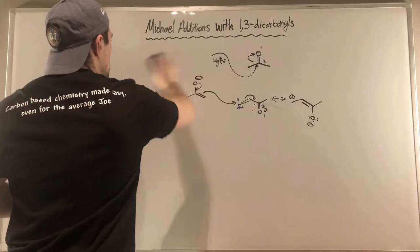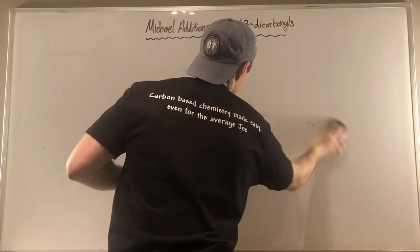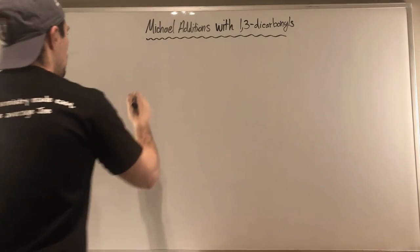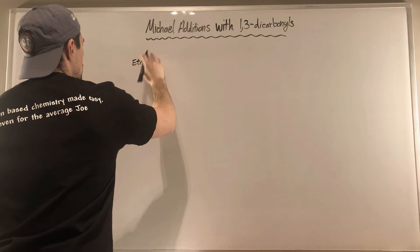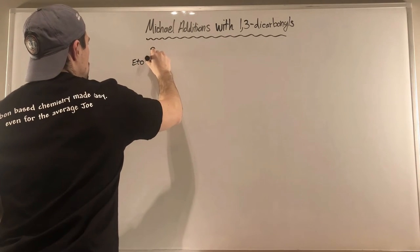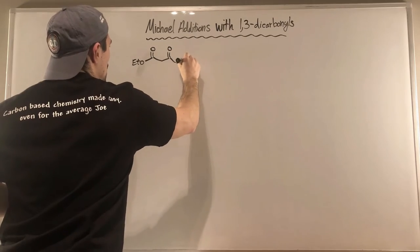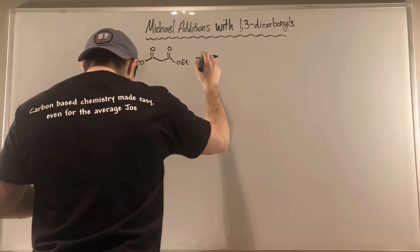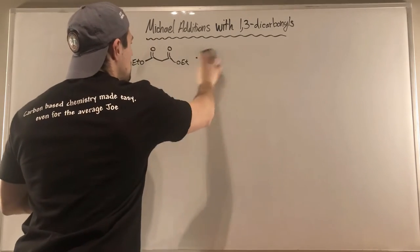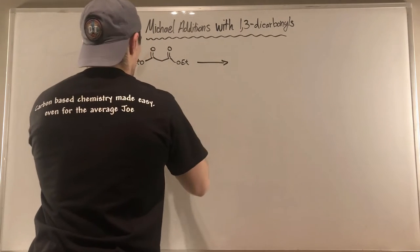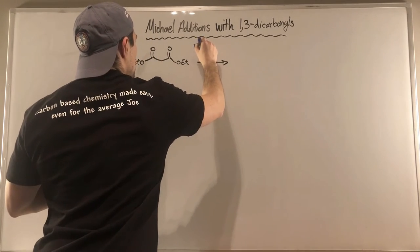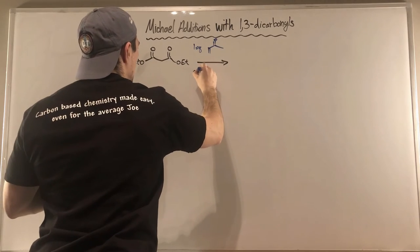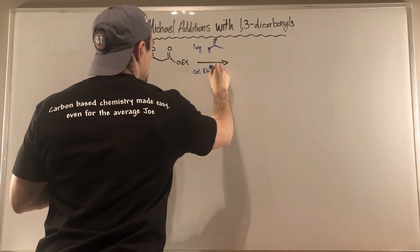The only difference here is our soft nucleophile isn't just a plain enolate — we're going to work with an ester enolate in the context of a 1,3-dicarbonyl. For example, I'm going to use a diester for this example, though I could use a beta-keto ester or a 1,3-diketone. I'll toss in one equivalent of an enone, as well as catalytic sodium ethoxide and ethanol.